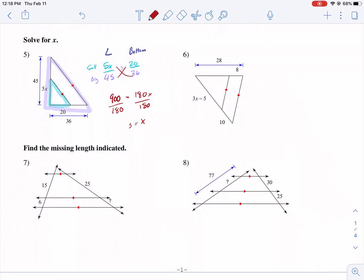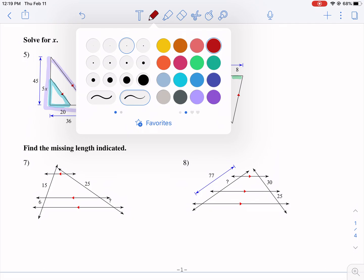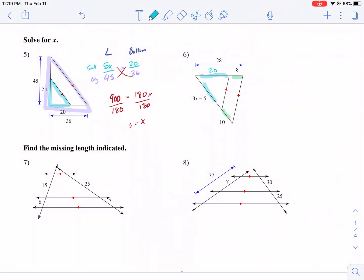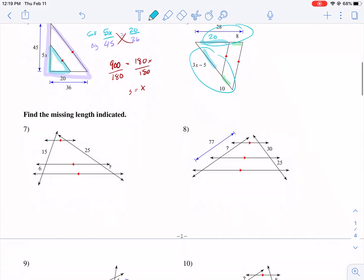This one you could use side splitter for. So what I would do for this one, I'm just going to paint the picture and then proceed from there to a different problem. I would find these, do 20. This would be 28 minus 8, and you'd get this as a distance of 20, and then compare these two sides and these two sides. That's how you would do that one.